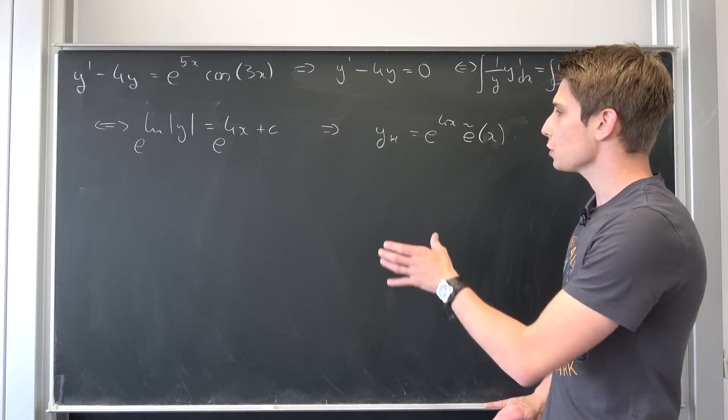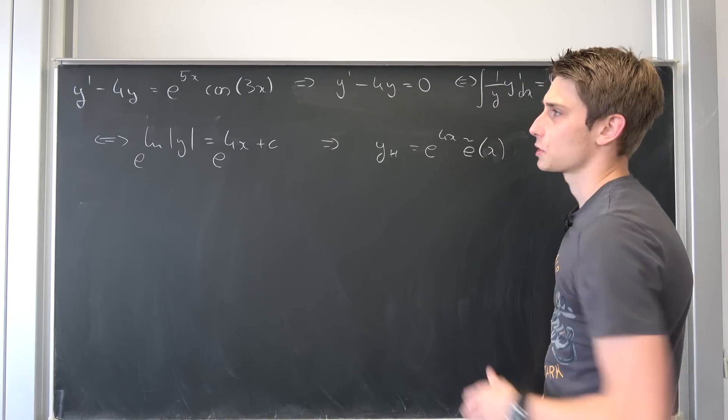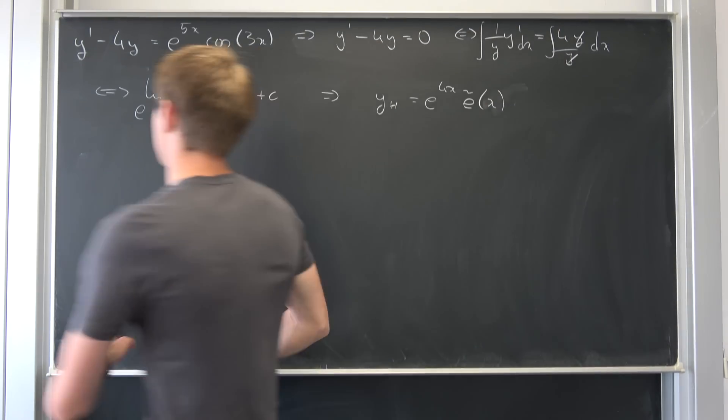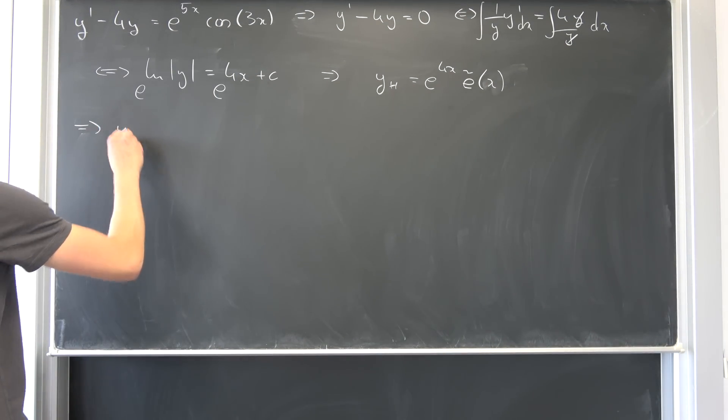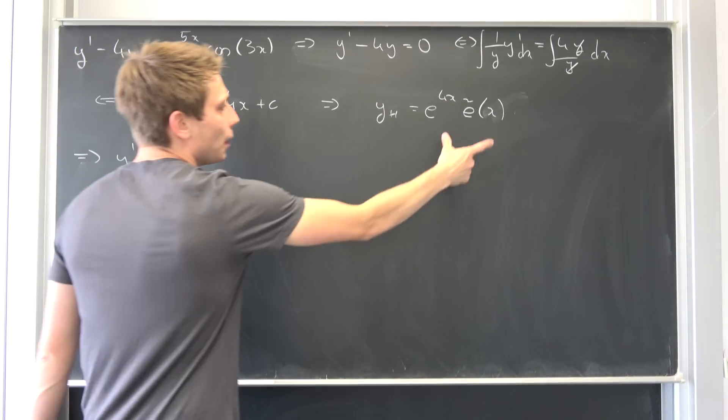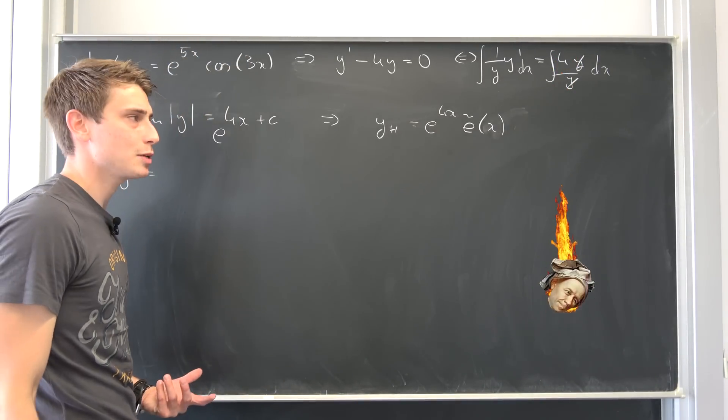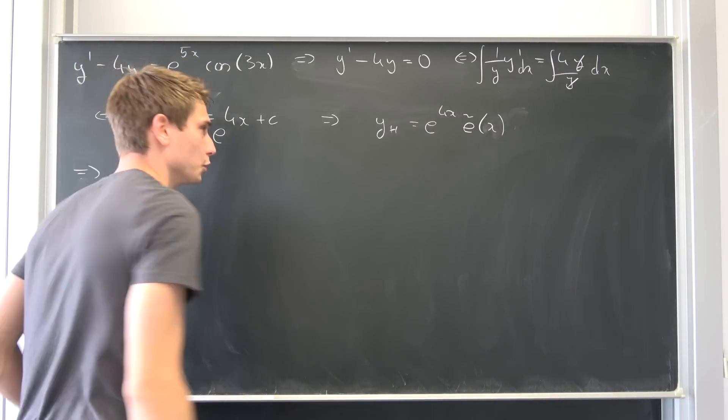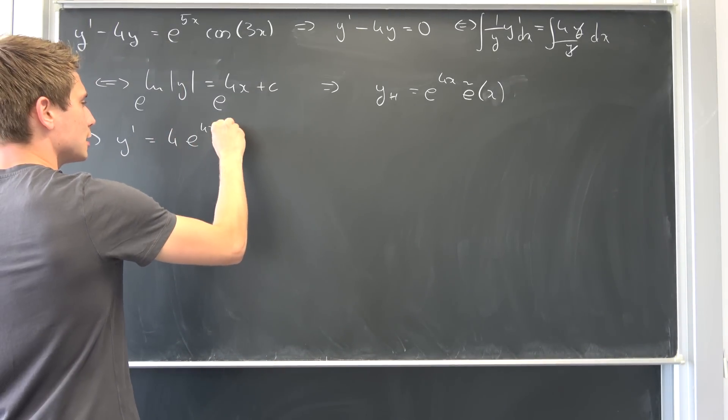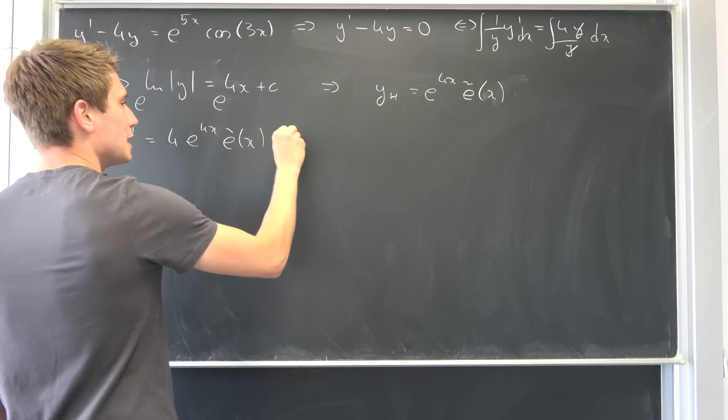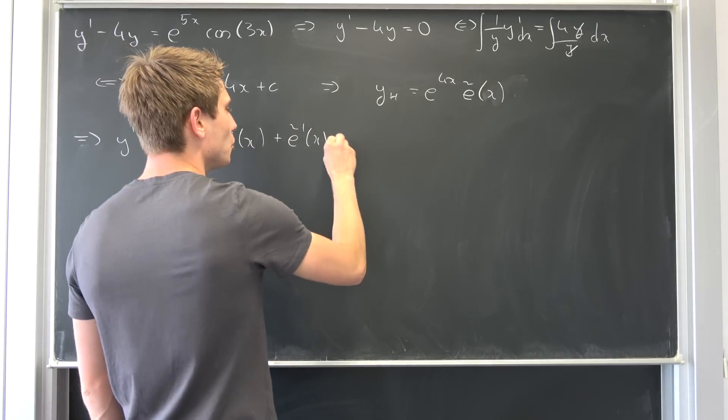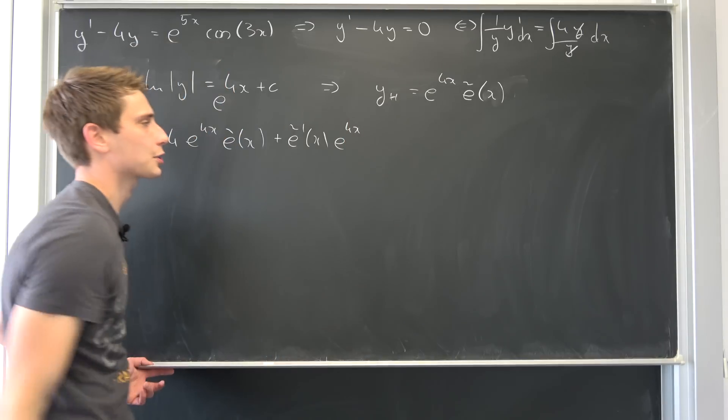And well our goal for now is to differentiate this thing and plug this complementary solution into here to get our particular solution. So that also means that I'm going to call it y. Once again y prime is now nothing but well both of those are functions of x. That means we need to use the product rule in this case. So the first part is 4 times e to the 4x e-schlange of x plus e-schlange prime of x. We don't know anything about this bad boy at the moment times e to the 4x.